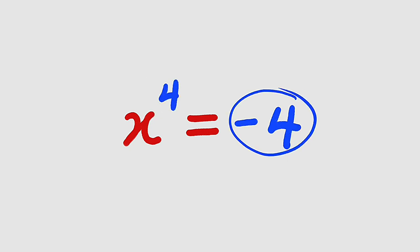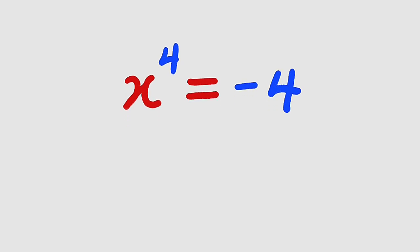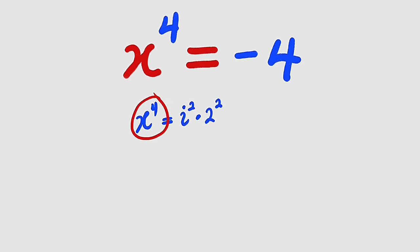On the right hand side we have negative 4. You should know that negative 4 can be written as negative 1 multiplied by 4. And in the complex world, negative 1 is the same thing as i squared. Therefore we can rewrite this equation as x raised to the power of 4 equal to i squared times 4, and 4 is the same thing as 2 squared. And x raised to the power of 4 can be written as x squared raised to the power of 2.